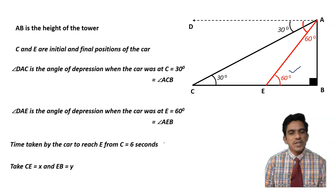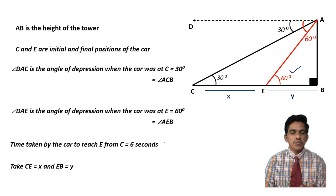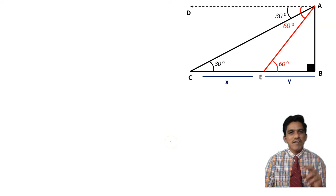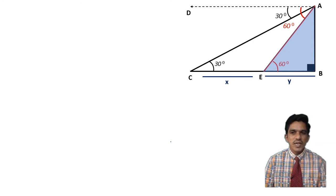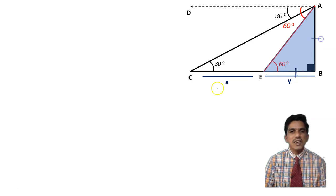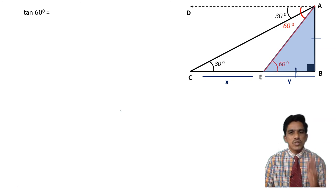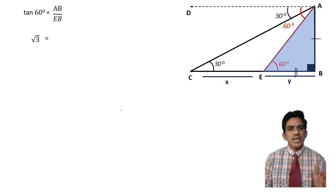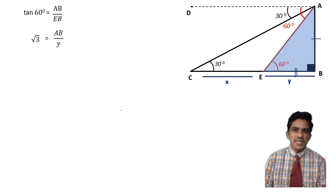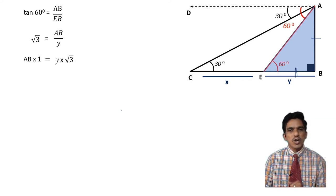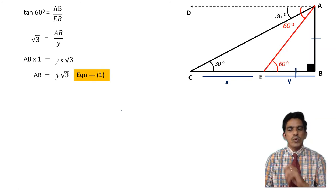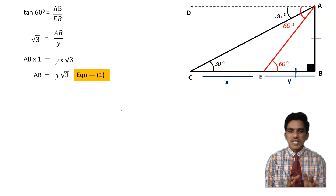We have two right angle triangles. Consider triangle ABE with angle 60 degrees. Tan 60 equals AB over EB, so root 3 equals AB over Y. Cross-multiplying gives AB equals Y root 3. This is equation 1.